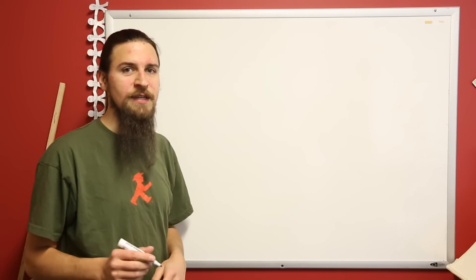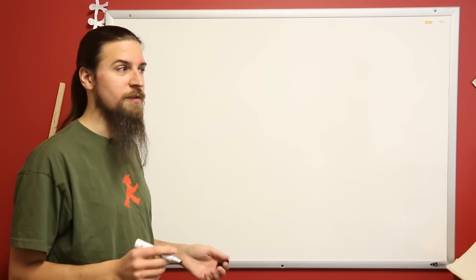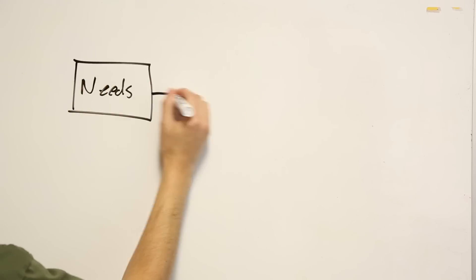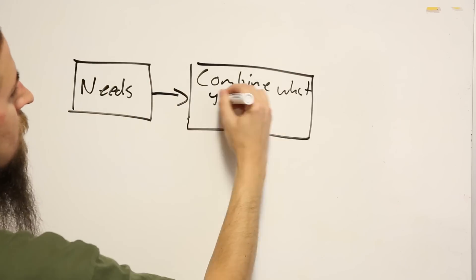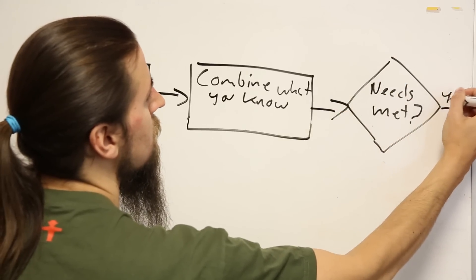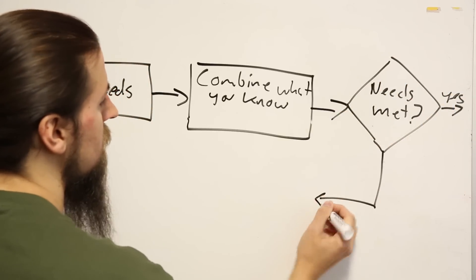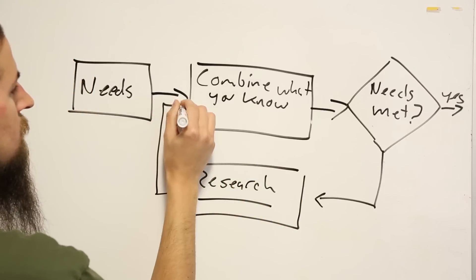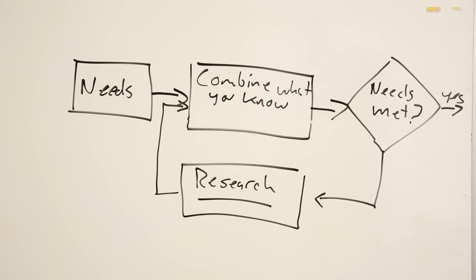To me, engineering is figuring out how to make things, so I've got a really simple process here that generally fits all the requirements. First, identify your needs, then combine what you know and try making it, and then see if it fit your needs. If yes, then you're done, but if no, do some research and try making it again. If you get caught up in this loop for too long, you can always go back and redefine what you want.